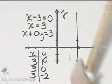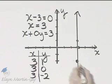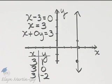And all linear equations of this form, X equals a constant, will have graphs that are vertical lines.